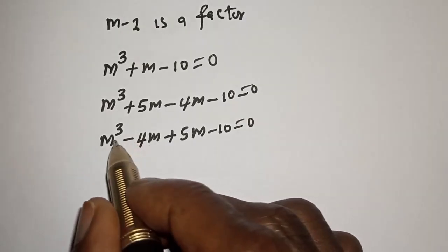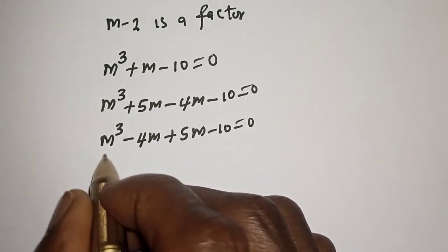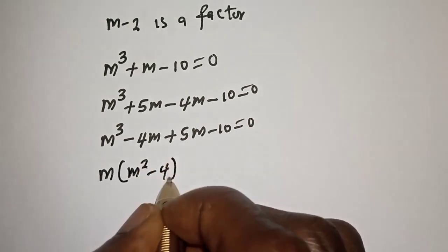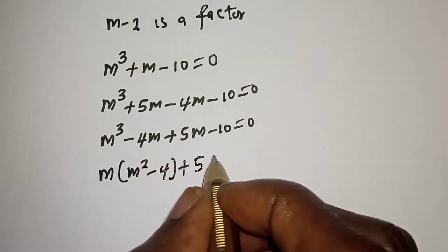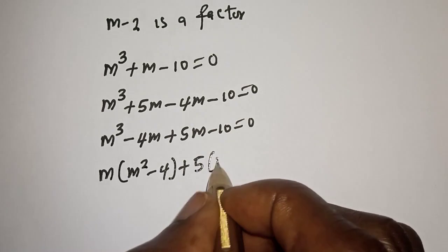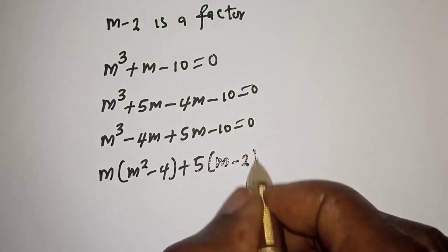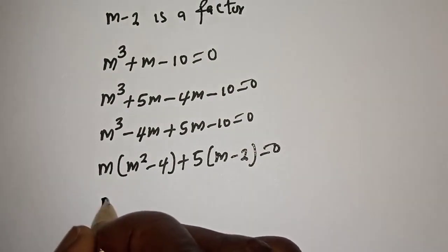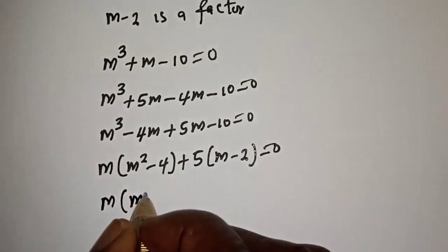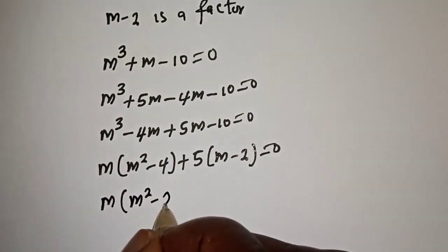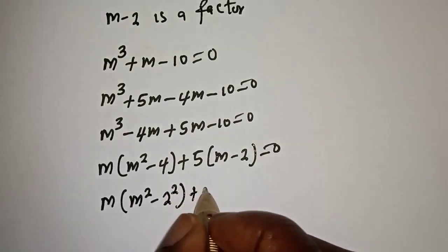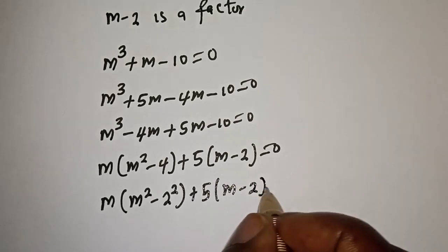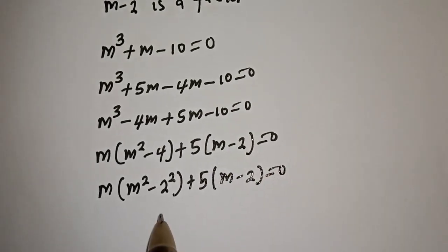From here, m is common — let's bring it out. m raised to the power 3 plus 5m minus 10 is equal to 0. This gives m bracket m squared minus 4, which is 2 squared, plus 5m minus 2 is equal to 0.